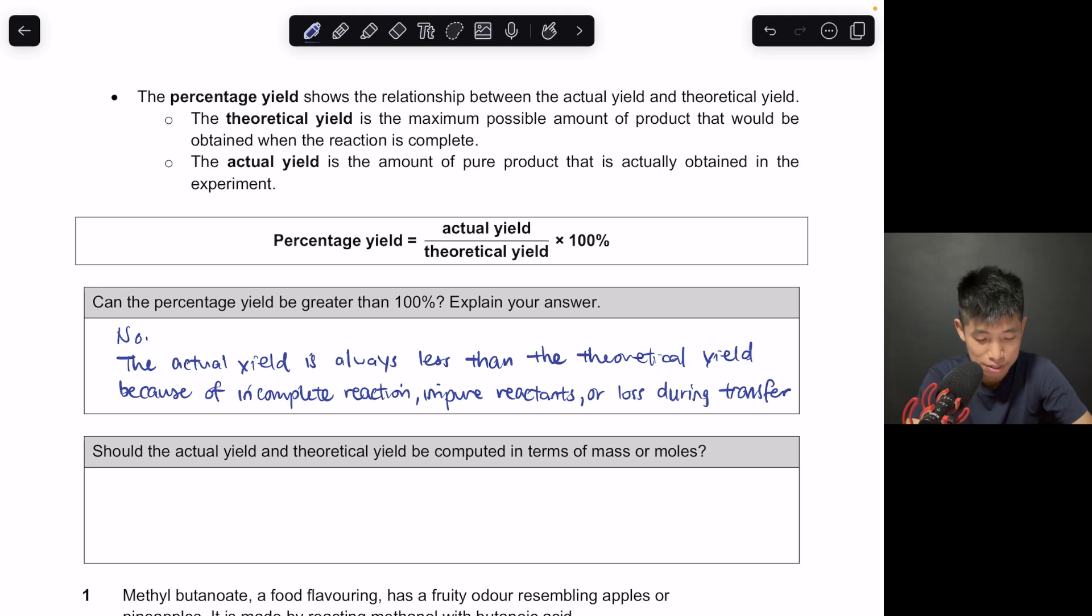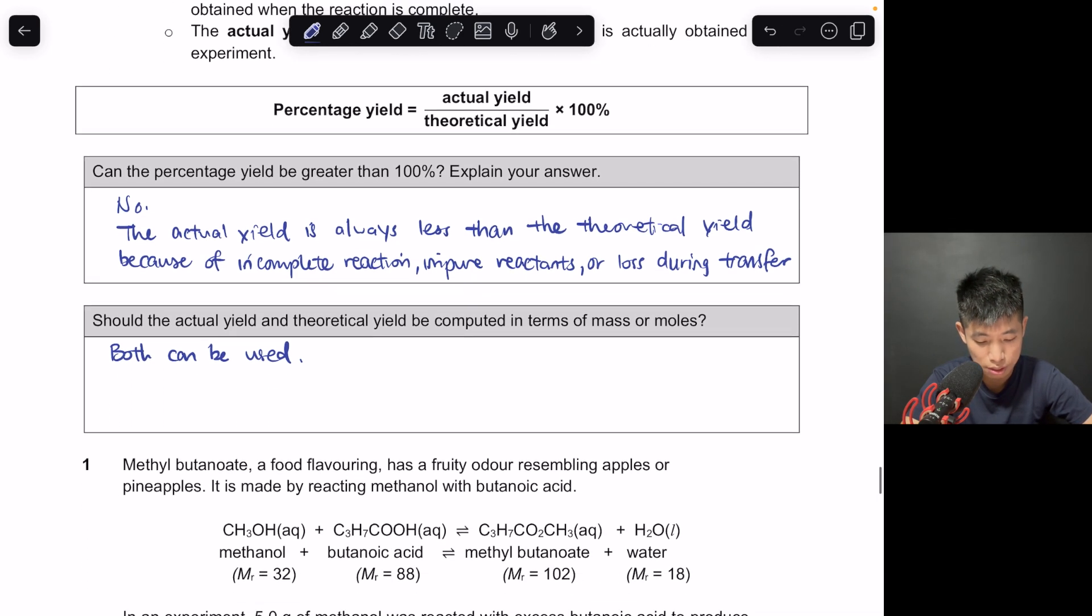Second question. When we put the ratio of the actual over theoretical yield, do you think we should be using mass or in terms of moles? What do you think? So both can be used, because if you put the mass over MR as the numerator, and the mass over MR as the denominator, because they are the same thing, the MR will cancel out. So you can use the mass over mass, or moles over moles. In the case of gases, you can use volume over volume. So it doesn't really matter here. So it depends on what is given in the question, and what is most convenient.